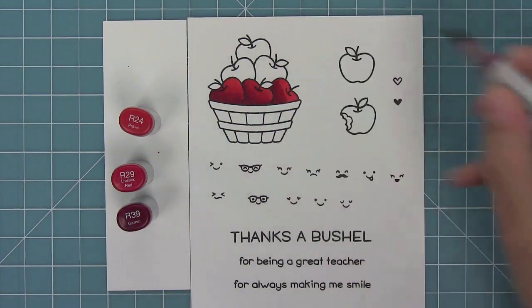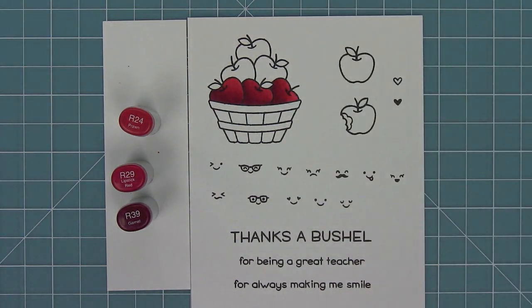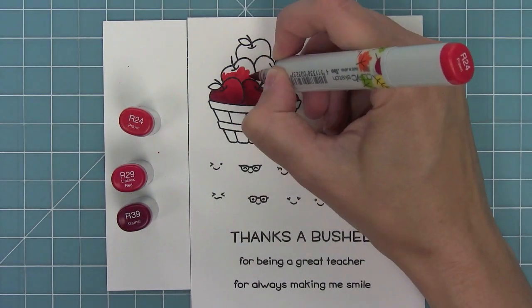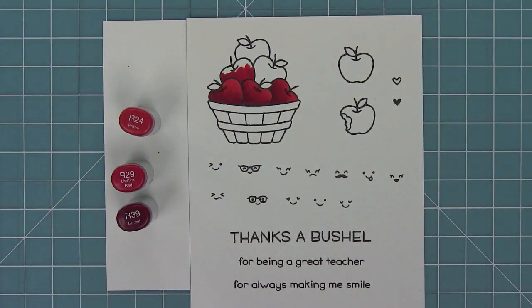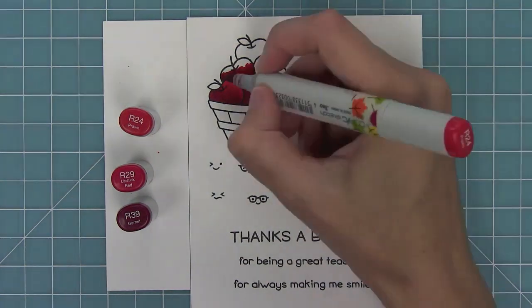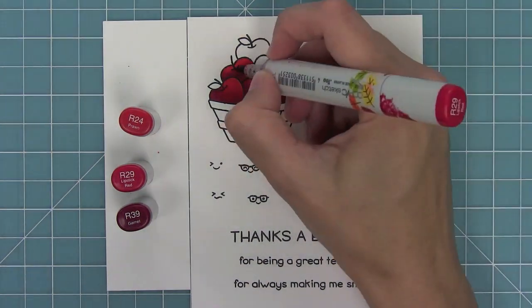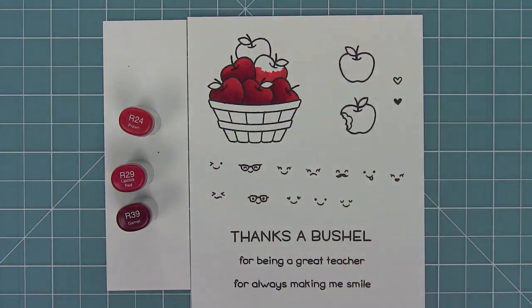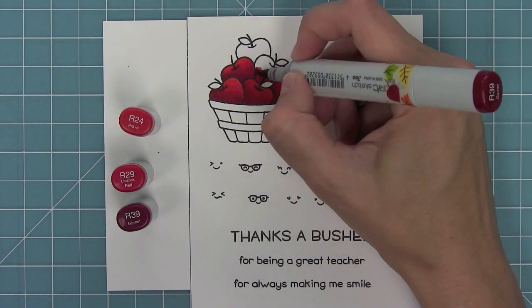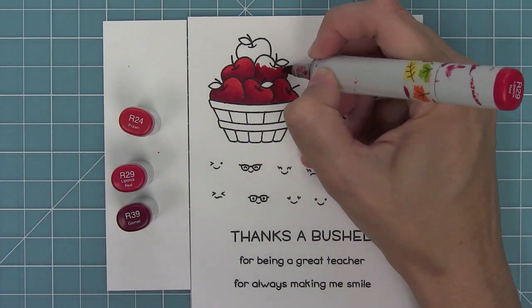Now you'll notice that I leave one part of the apple area white when I'm coloring it. I'm going to leave one area white, and that's because that's the area that I want to be the lightest. When you layer Copic markers over and over again, they do become darker as the color layers on top of the previous color.